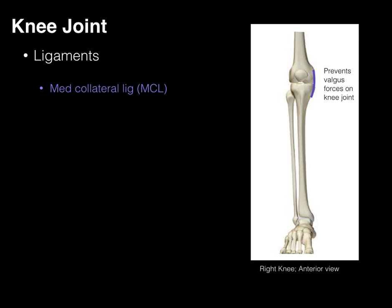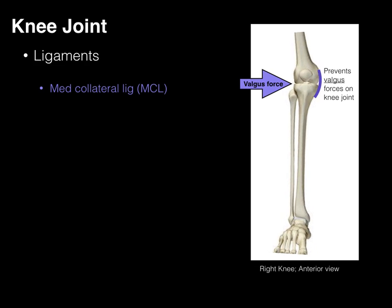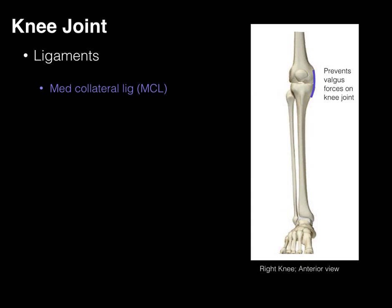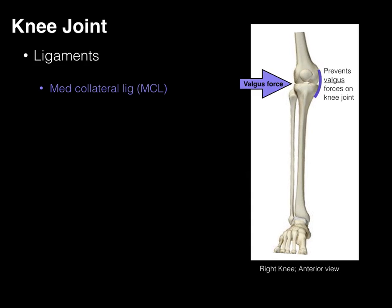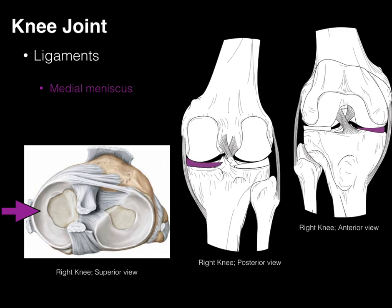In contrast, the medial collateral ligament prevents valgus forces on the knee joint, which are forces that bend the knee more medially toward the midline of the body. Then our menisci — these are fibrocartilage wedges found within the knee joint. The medial meniscus and lateral meniscus help with absorption of shock and help keep the femoral condyles on the tibia when the knee is bending.